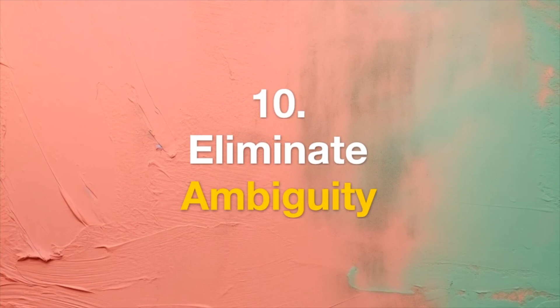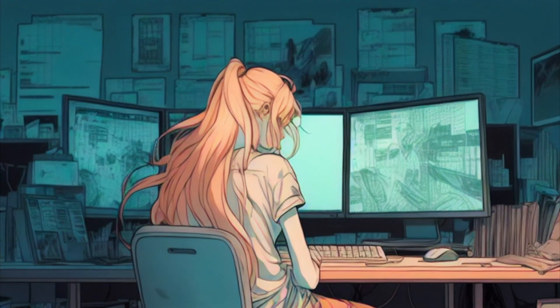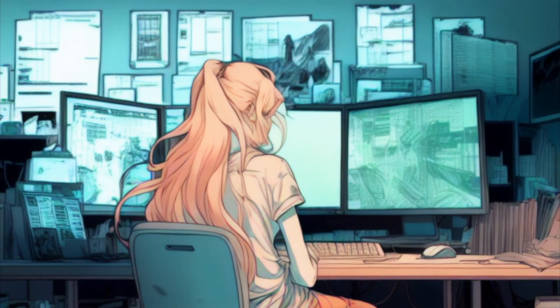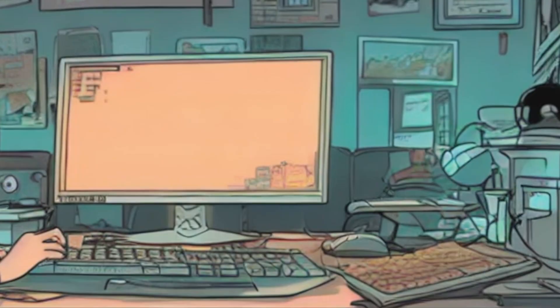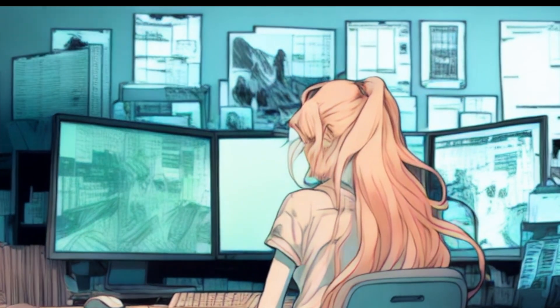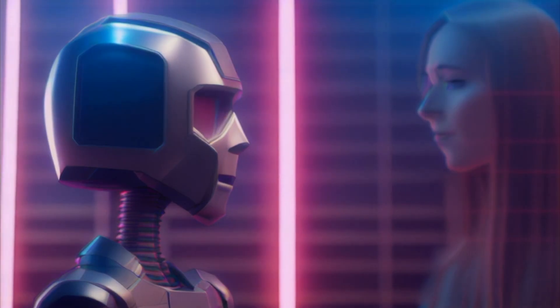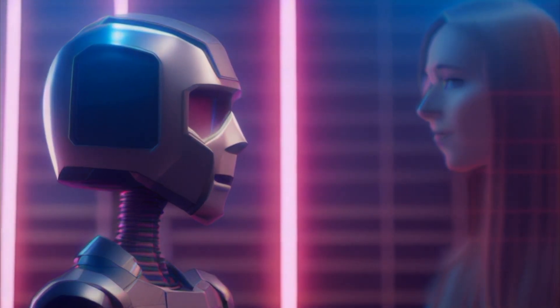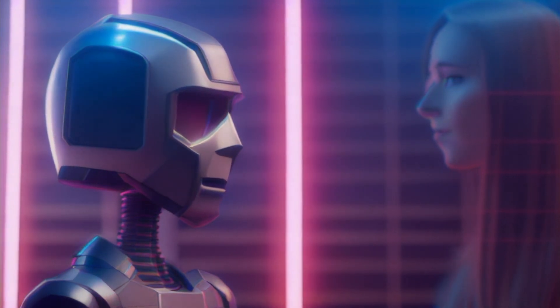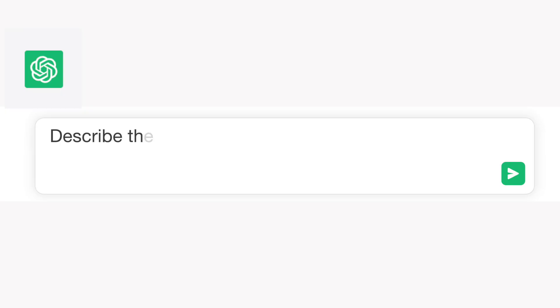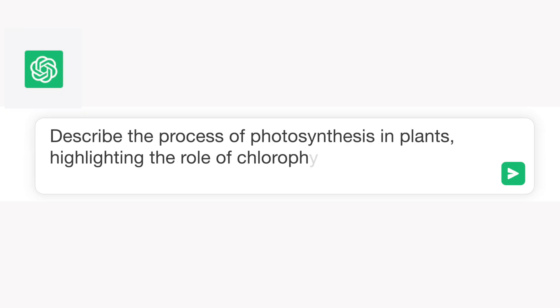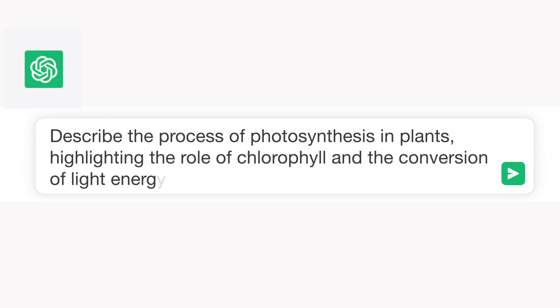Tip 10: Eliminate Ambiguity. Create prompts that leave no room for confusion. Well-structured, precise prompts yield accurate and focused responses from ChatGPT. Example: "Describe the process of photosynthesis in plants, highlighting the role of chlorophyll and the conversion of light energy into chemical energy."